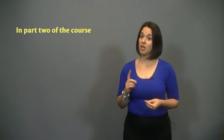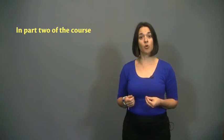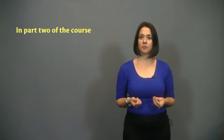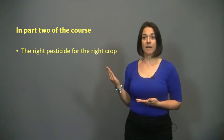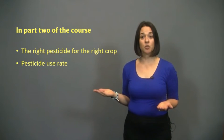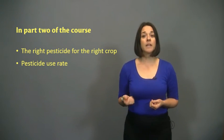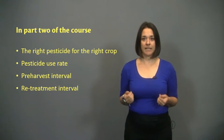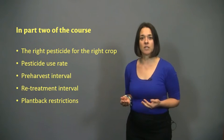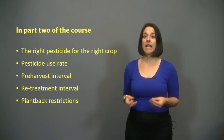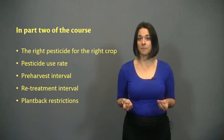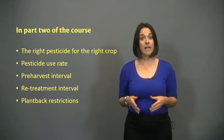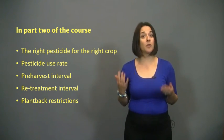The remainder of this course will focus on factors and label sections that you should pay special attention to in order to avoid illegal pesticide residues. We'll take a look at choosing the right pesticide for the right crop, pesticide use rate, the pre-harvest interval, the retreatment interval for repeat applications, and plant back restrictions that protect against illegal residues in subsequently planted crops. But before moving on further, let's check your understanding with a short quiz.